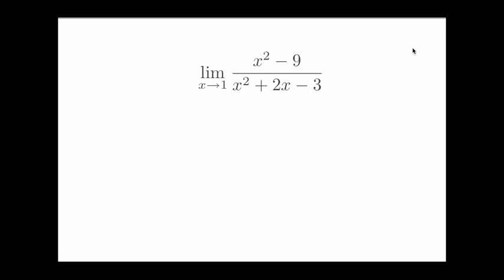Again, we should always try to evaluate the limit by plugging in the number directly just to see what happens. And if I do that, I get 1 minus 9 over 1 plus 2 minus 3. That's 0. So this actually, if I evaluate, gives me negative 8 over 0.